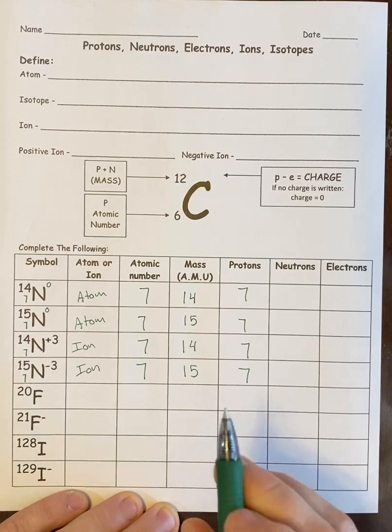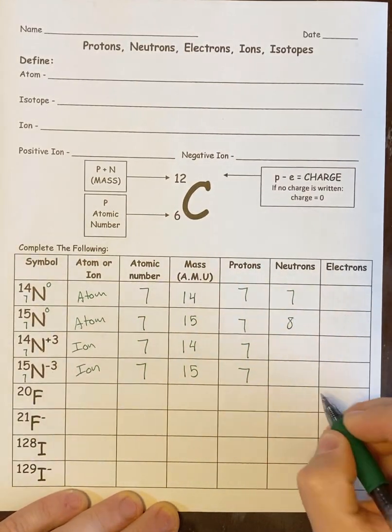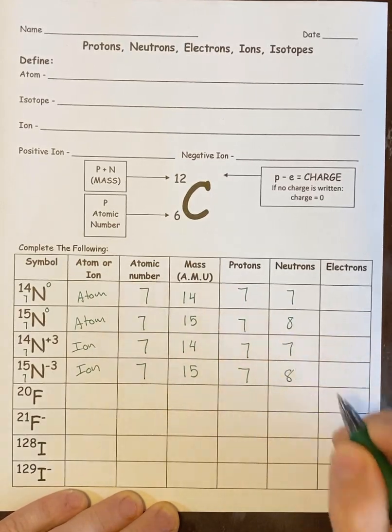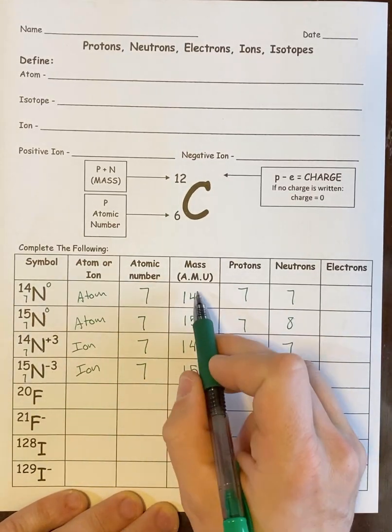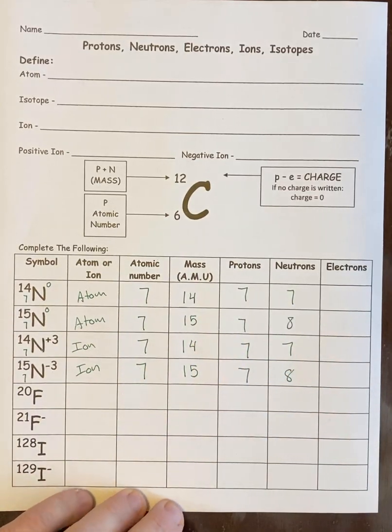For neutrons, we just subtract 7, 8, 7, 8. I'm just subtracting mass minus atomic number or mass minus proton number because they're the same thing, so there we go.